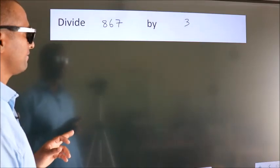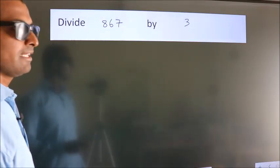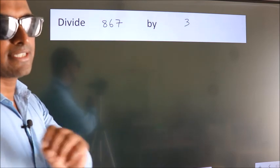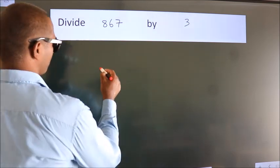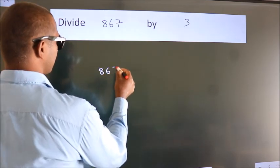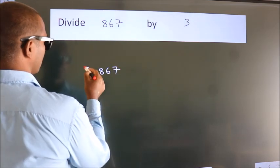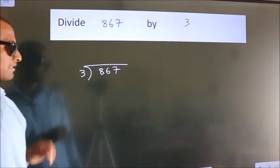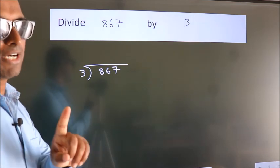Divide 867 by 3. To do this division, we should frame it in this way. 867 here, 3 here. This is your step 1.